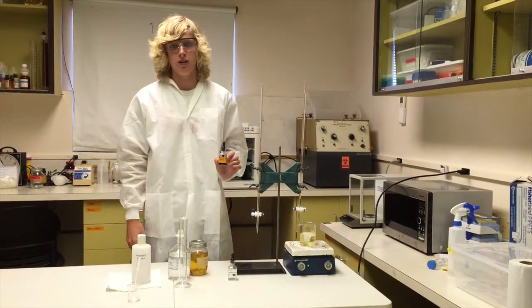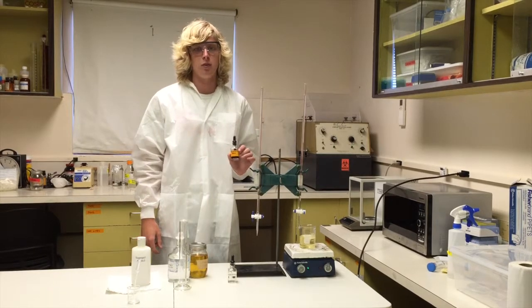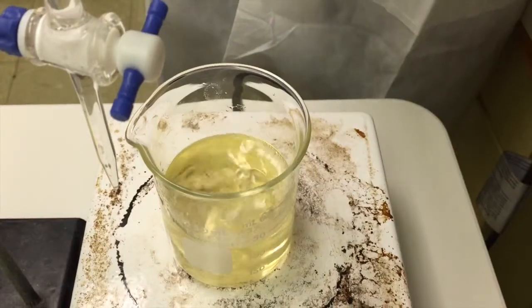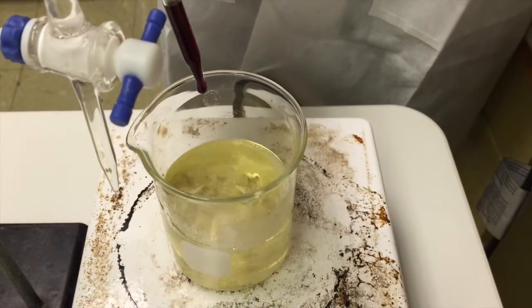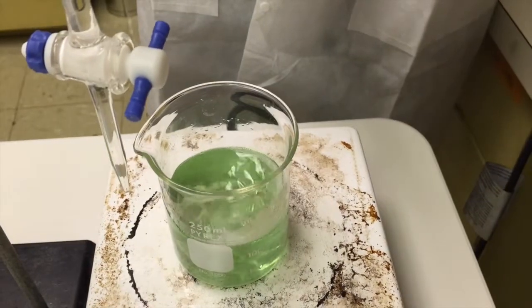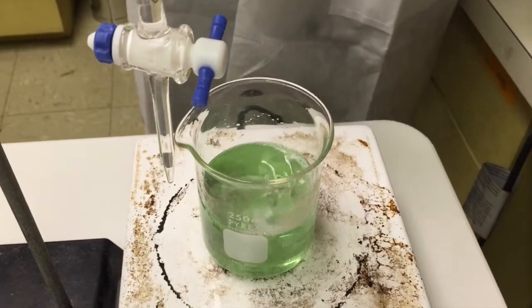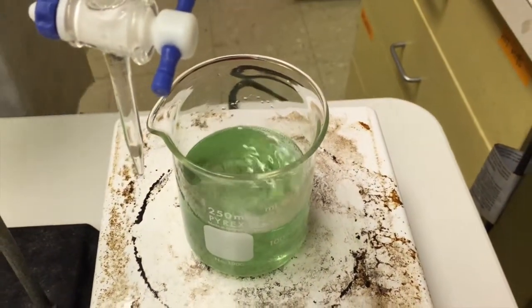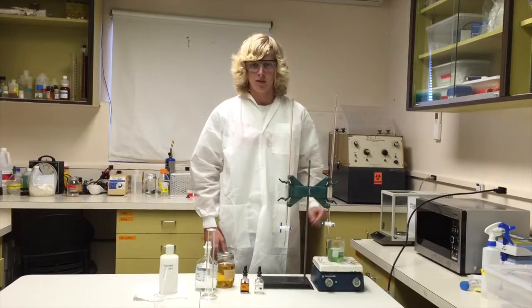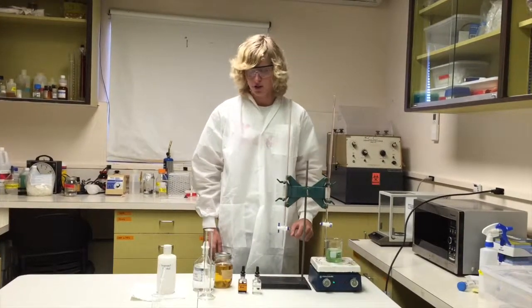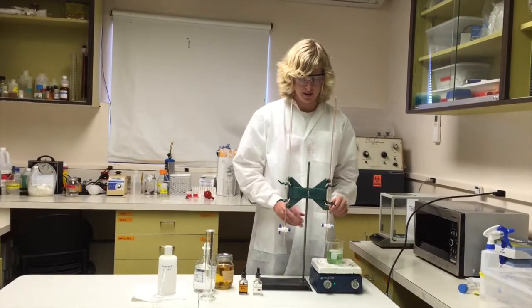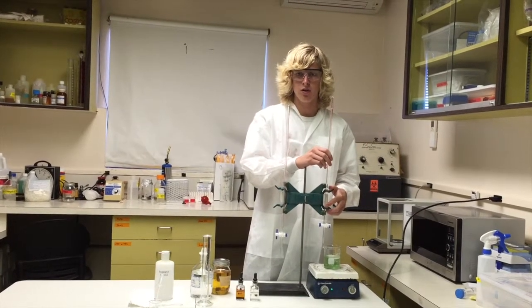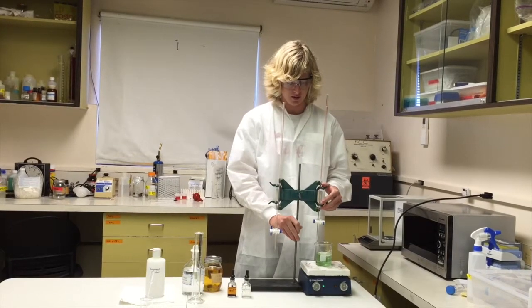The next step is we are going to now add 20 drops of bromothymol blue to our alcohol ester solution. So now, see the color difference after we've added 20 drops? It appears rather greenish. The next step is now we are going to add our hydrochloric acid solution into this until the solution changes color from this bluish green to a bright yellow.